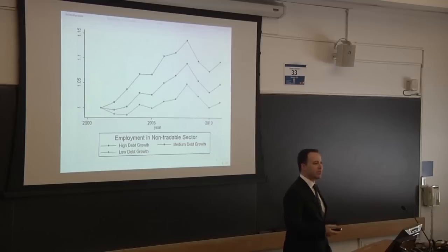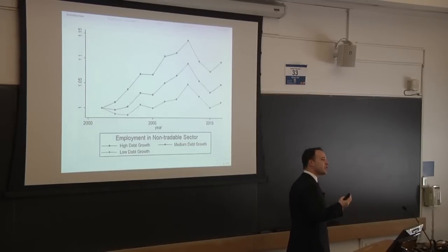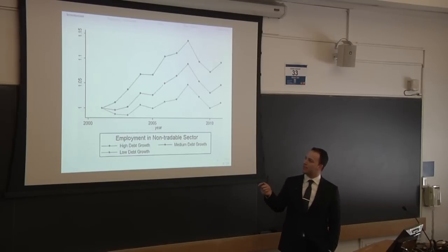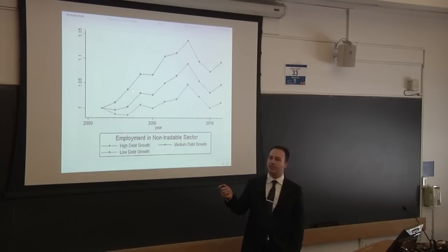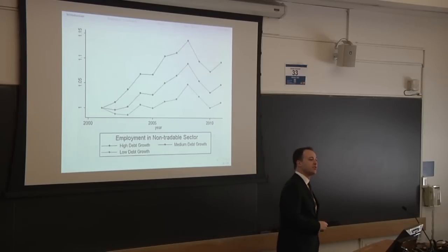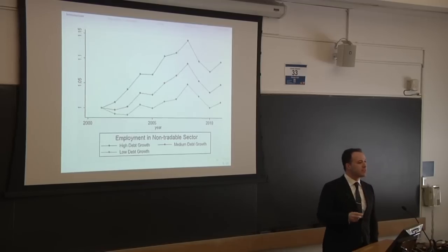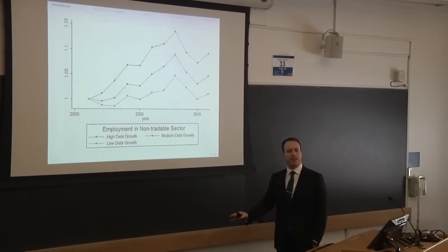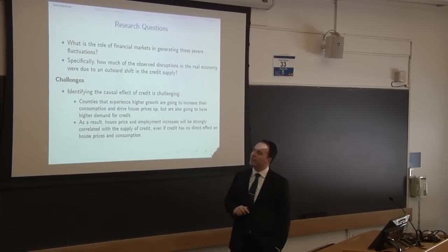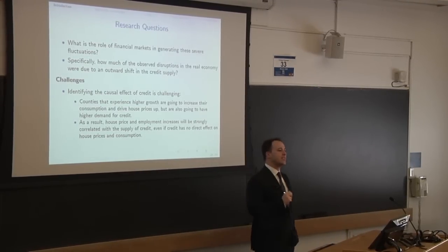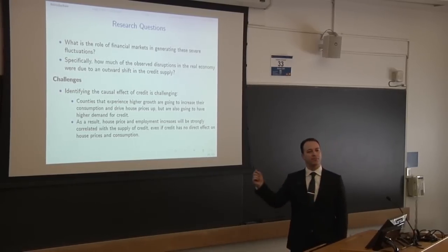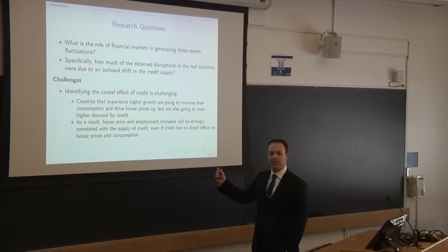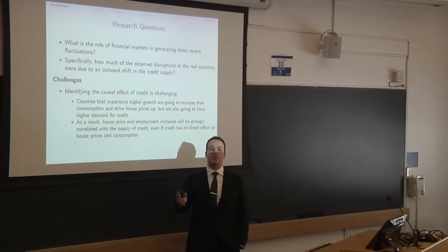Finally, showing employment: the graph is exactly the same type. The first line is for regions with a high level of debt, the middle is the average, and the lower line is for low debt regions. We see a huge increase in employment and then a sharp decline. So we see there is a relation between the credit markets — in particular the mortgage market — and what happens in real economic activity in terms of house prices, employment, and consumption.